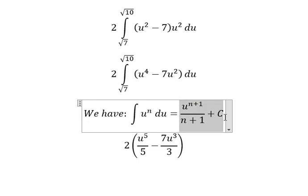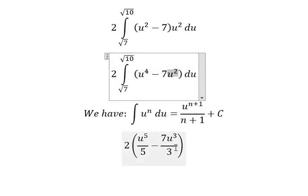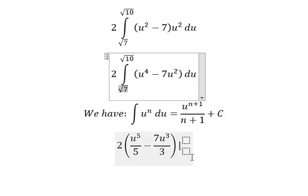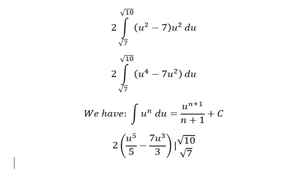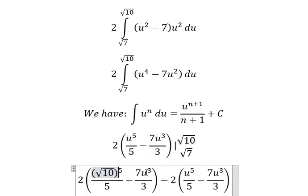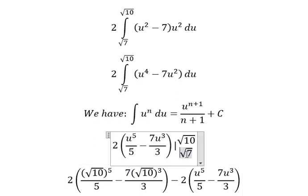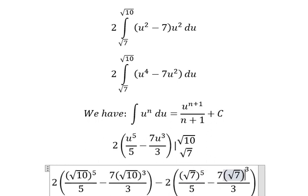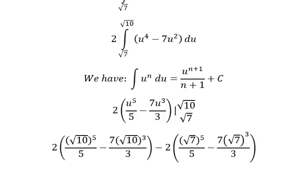Now we evaluate from the square root of 7 to the square root of 10. We substitute the upper bound √10 and the lower bound √7 into our result. This is the end, thank you for watching.